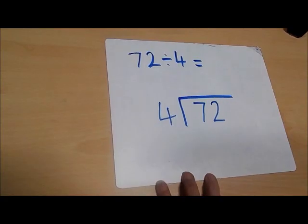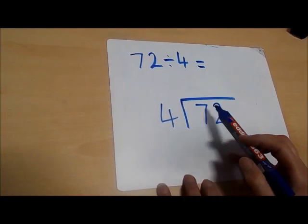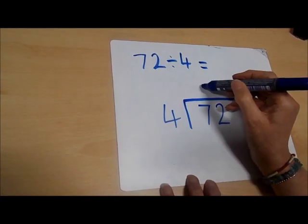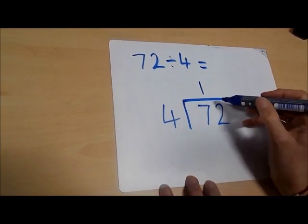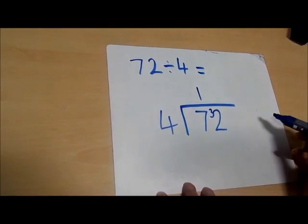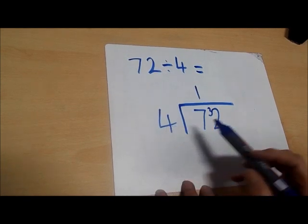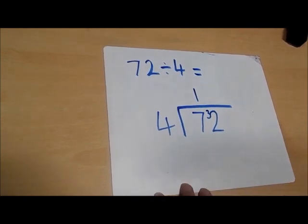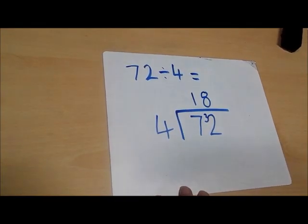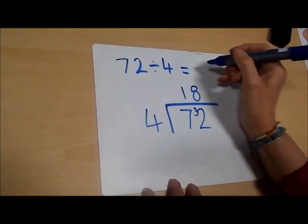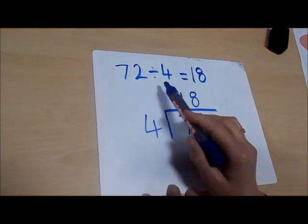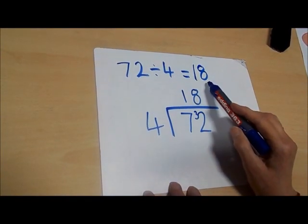First of all, we say to ourselves: how many groups of four are there in seven? Well, there's one group of four and the remainder is three, and that goes here. Then we say: how many fours are there in 32? There are eight fours in 32. So the answer to our calculation is 18 — 72 divided by four equals 18.